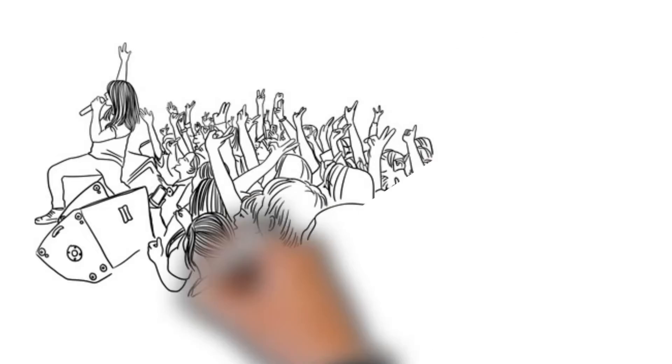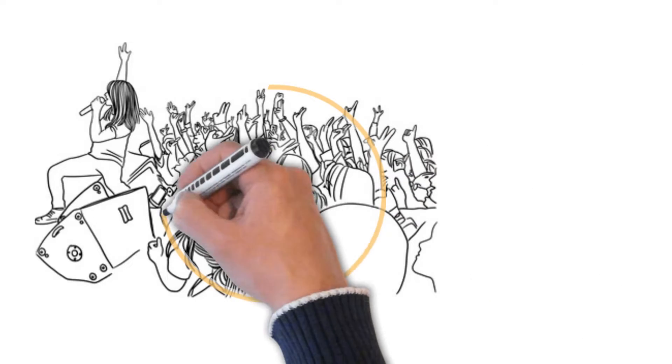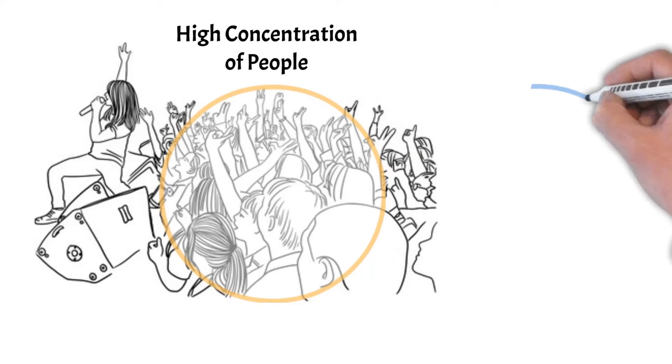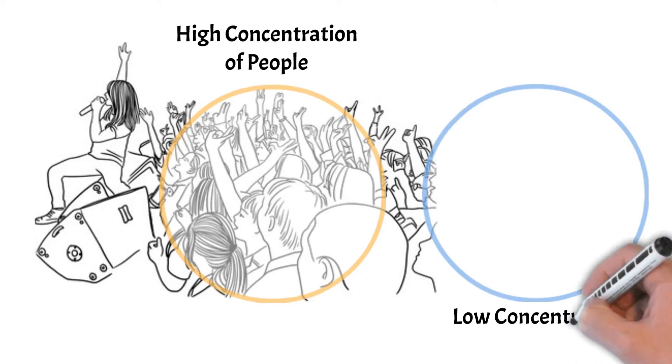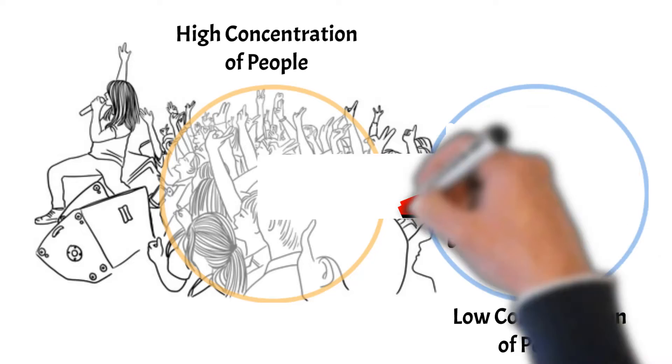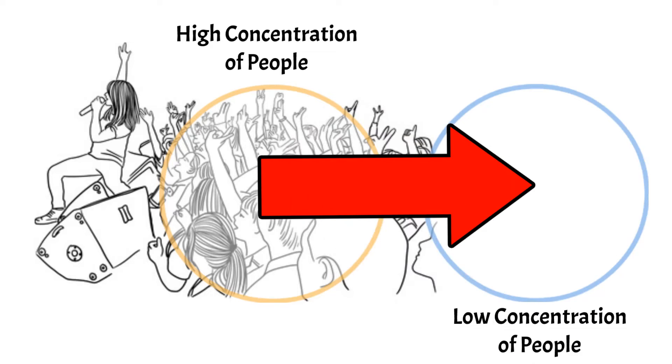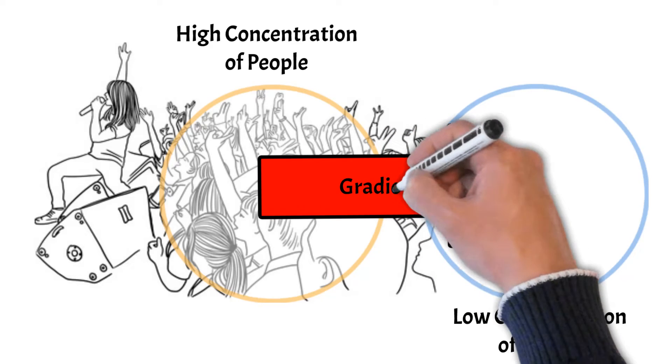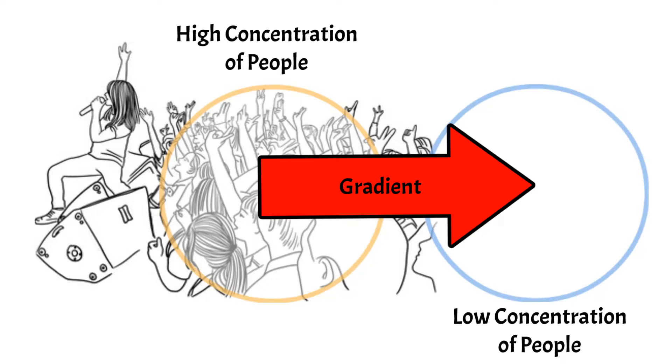Pretend that you're at a concert. There are a ton of people at the front near the stage and as you get further from the stage, there are less and less people. Depending on what you want your experience to be like, there is an optimal spot in the crowd where you can achieve the perfect ratio of the proximity to the stage to how tight the space around you is. The crowd is essentially a gradient that changes the experience of someone in it depending on where they are within it.